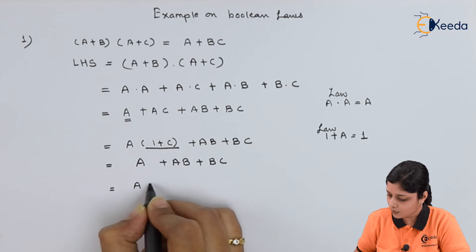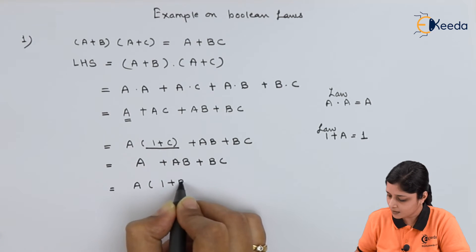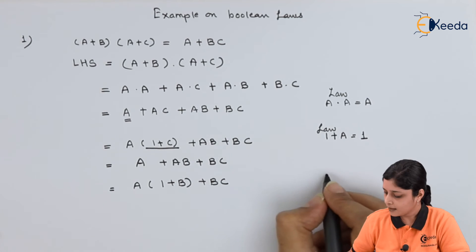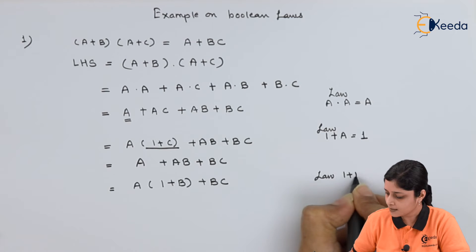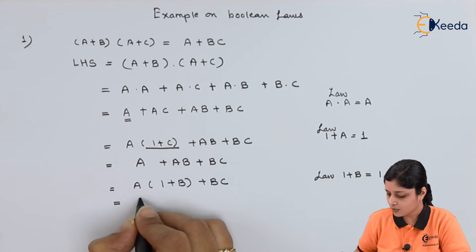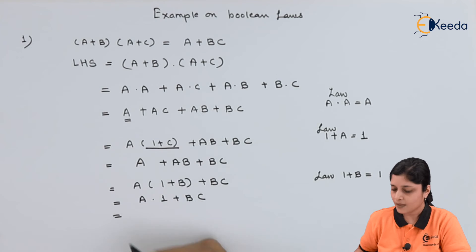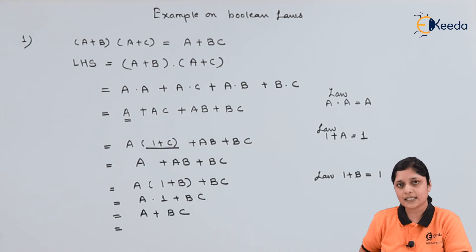Again, take A common: A(1+B) + BC. Now, according to the law, 1+B equals to always 1. So A·1 + BC. A·1 is A + BC. This is nothing but your RHS side.